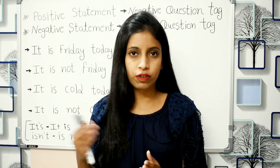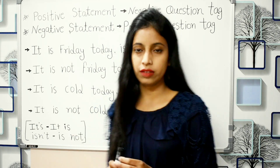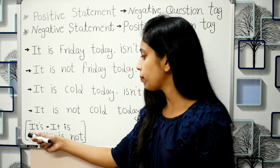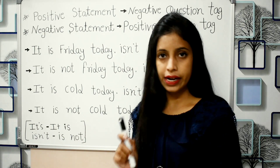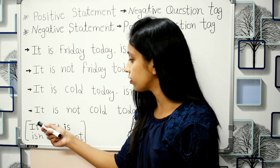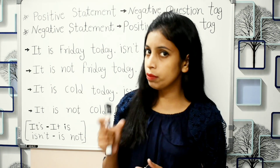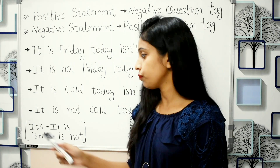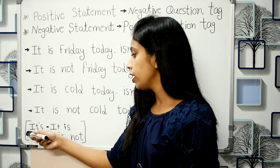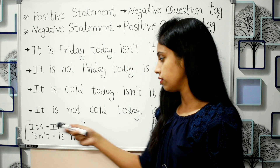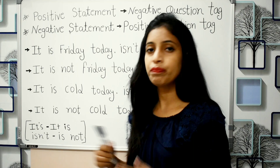First, let's talk about two short forms. The first is 'it's' — I-T, then an apostrophe on top, then S. So 'it's' is the short form of 'it is'.